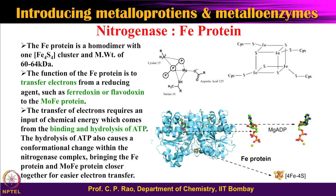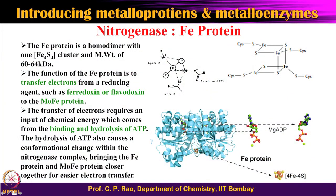This electron transfer does not happen spontaneously; energy is involved through hydrolysis of ATP. The hydrolysis — dephosphorylation and phosphorylation cycle — brings a conformational change such that the iron protein comes into good contact with the molybdenum iron protein, enabling effective electron transfer from the iron-sulfur cluster in the iron protein to a different kind of iron-sulfur cluster present in the molybdenum iron protein.